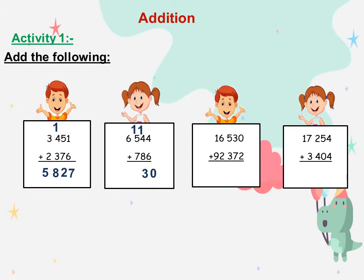1 plus 5 equals 6. 6 plus 7 equals 13: write 3 and carry up 1. 1 plus 6 is 7.